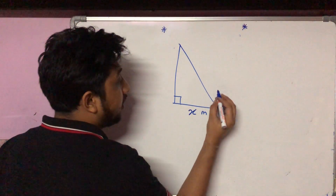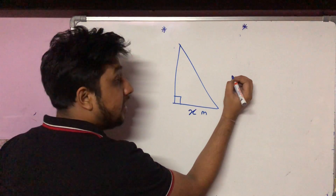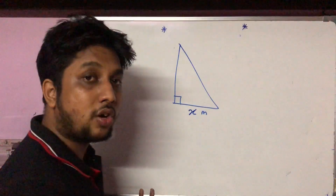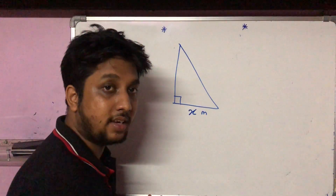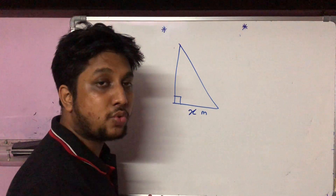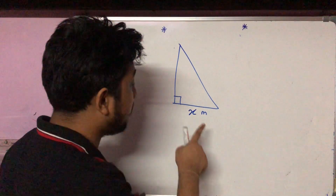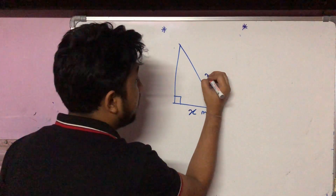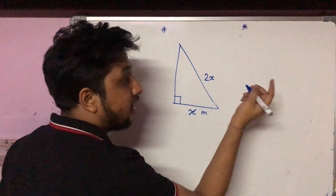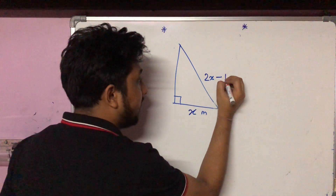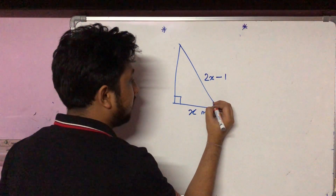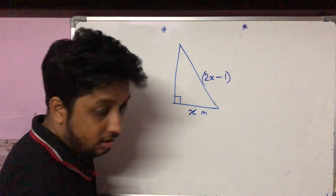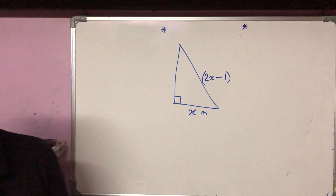That means the hypotenuse is 1 meter less — twice the shortest side is 2 into x, that is 2x, and 1 less than that means the hypotenuse is 2x minus 1.